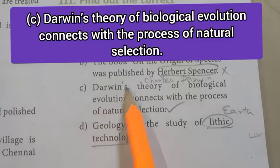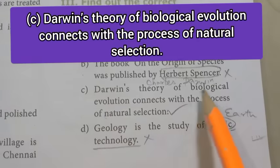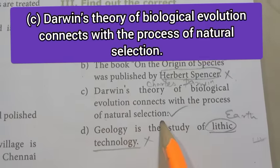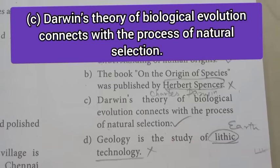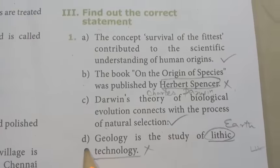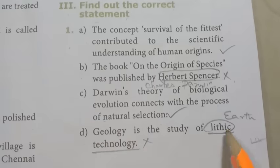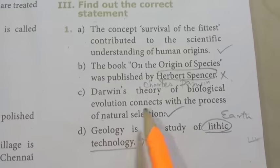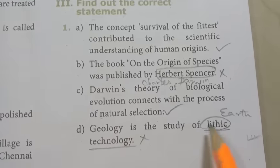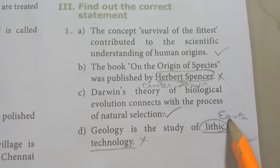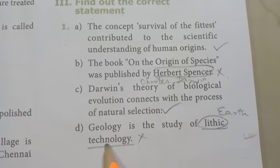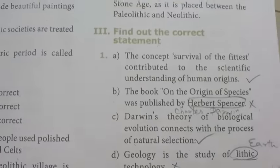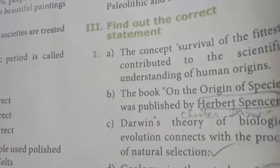C - Darwin's theory of biological evolution connects with the process of natural selection - this statement is correct. D - geology is the study of Lithic Technology - this statement is wrong; geology is the study of the Earth. So statement D is wrong. Turn to page 14.